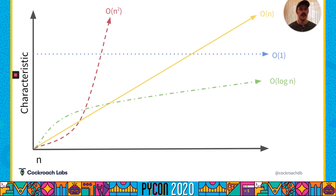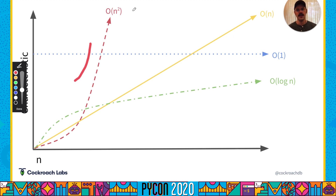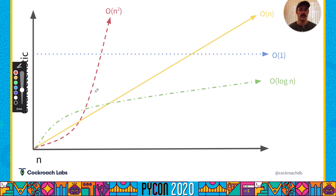This characteristic can also be the memory usage of a function as the dataset grows, or even the number of network requests a function ends up making. Looking at our graph, O(1), or any constant value, indicates no relationship between n and the characteristic we're tracking — regardless of how large n grows, our characteristic remains constant. O(n) indicates a linear relationship, so if we're iterating over a list of n values the runtime increases linearly with the length of that list. O(n²) indicates a more explosive relationship, often seen in functions with doubly nested loops. As long as we know the upper bound of n, it's okay to have characteristics like this.